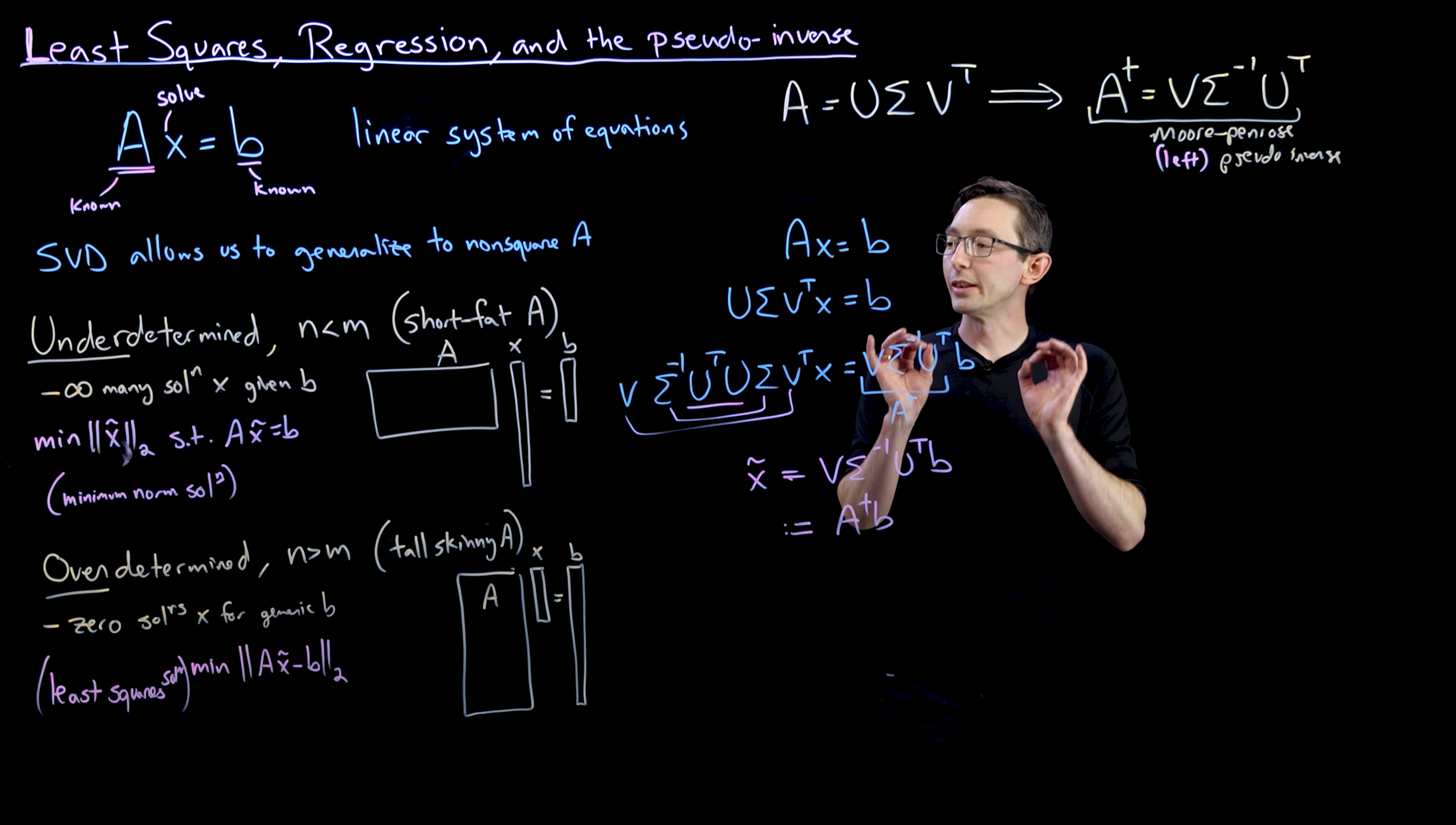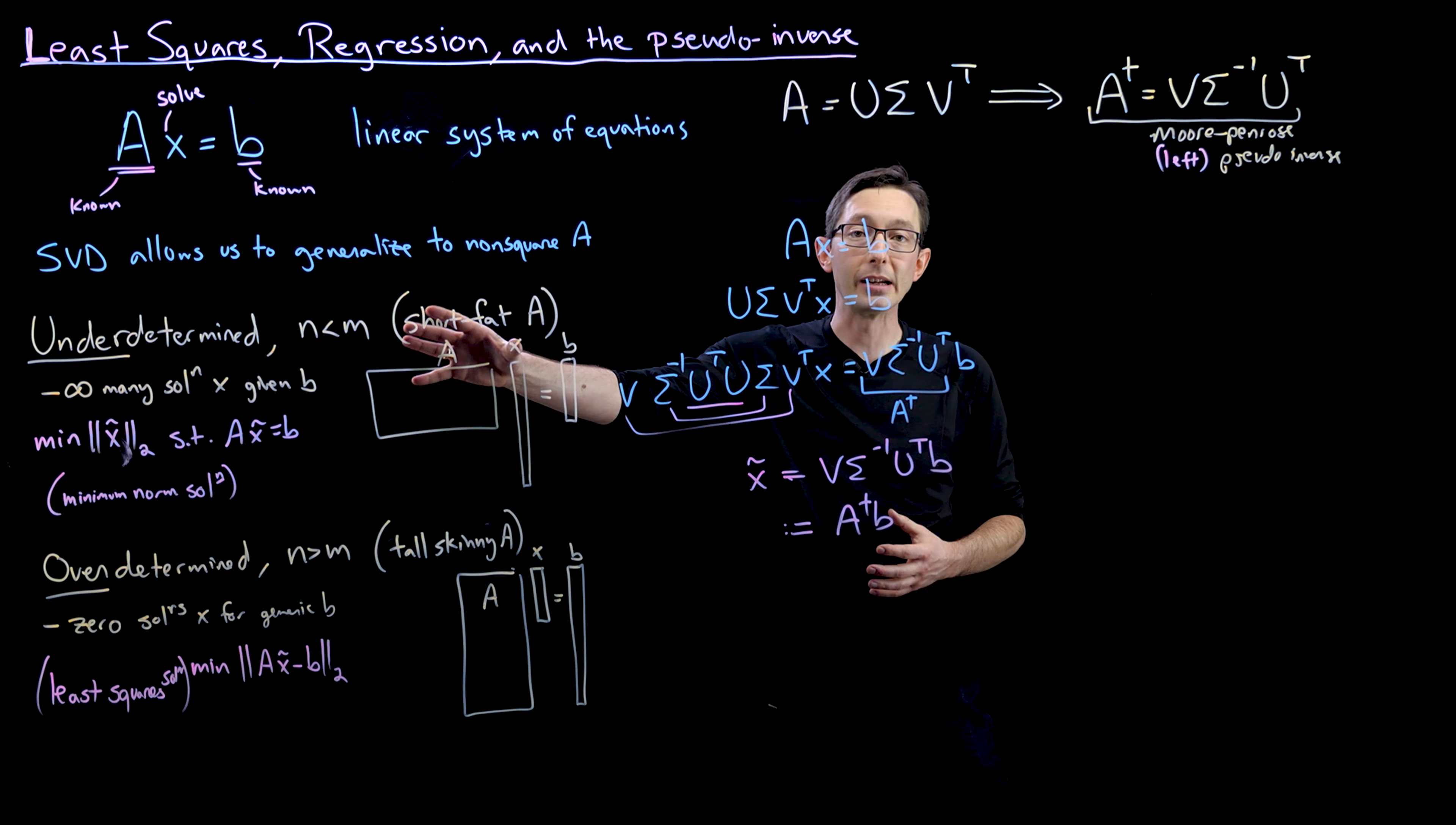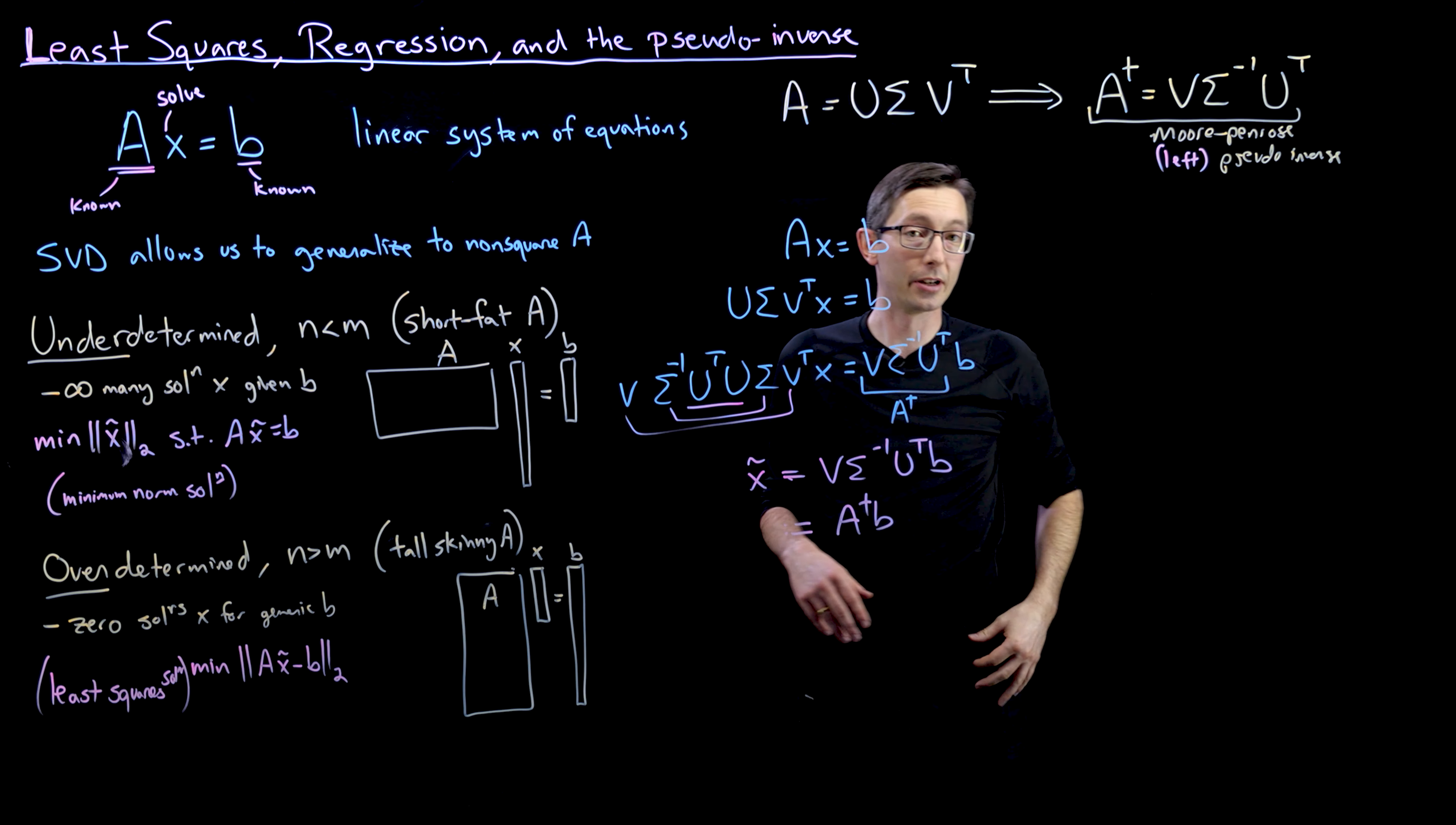Welcome back. In the last lecture, we showed that you can solve linear systems of equations Ax equal to b even when the A matrix is not square. In this underdetermined or overdetermined case where you have either infinitely many solutions or no exact solutions, you can still find an optimal x using this Mohr-Penrose pseudo-inverse, which is based on the singular value decomposition.